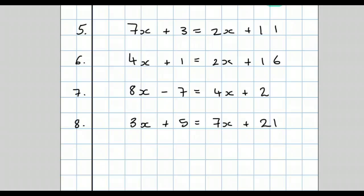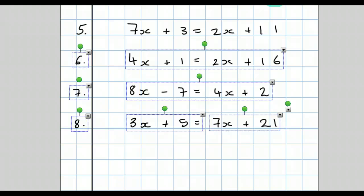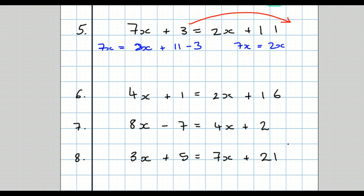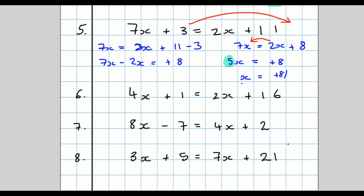Welcome back. Let's go through the answers. Question 5: move the numbers first. Your first line of working should be 7x equals 2x plus 11, take away 3, which simplifies to 7x equals 2x plus 8. Next, move all the letters together: 7x take away 2x equals plus 8, remembering we always take away unless there's a minus sign in front. So 5x equals plus 8, and the final answer is x equals plus 8 over 5.